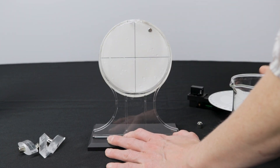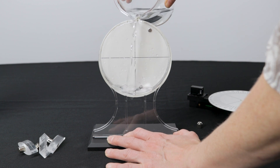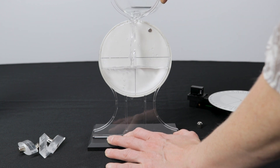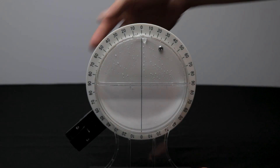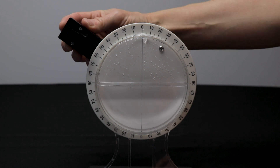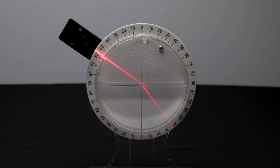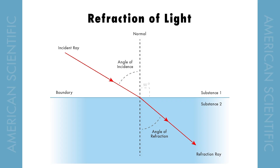For our first experiment, remove the dial face from the device and fill the tank with water to the horizon line. Attach the water tank back to the device, position the laser on the top half of the device, and turn it on. Do you see how the light beam bends after passing through the water? This is because the water is denser than the air, which slows down the light causing it to bend. This change in direction is called refraction.